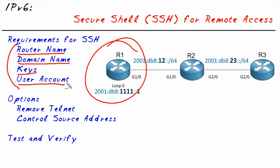With SSH, when we connect, it doesn't just want a password — it wants to know who we are and then it wants the password for that user. So we're going to create a local user account in what they call the local database. The local database is simply a fancy way of saying the running configuration on this router.